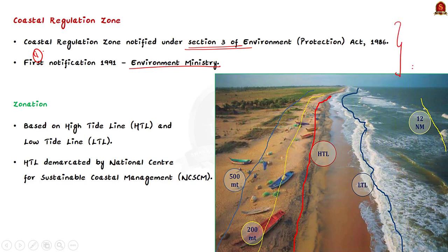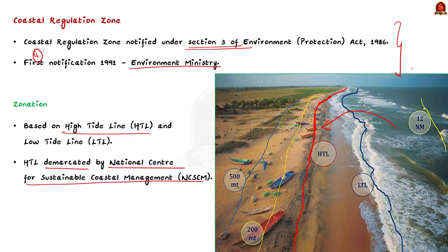Largely, the CRZ area is based on the high tide line. The high tide line means the line on the land up to which the highest water level reaches during the spring tide. This HTL — short for high tide line — is demarcated by the National Center for Sustainable Coast Management. In the image, the red line is the high tide line and the blue line is the low tide line, which is the lowest level the water reaches during the spring tide.